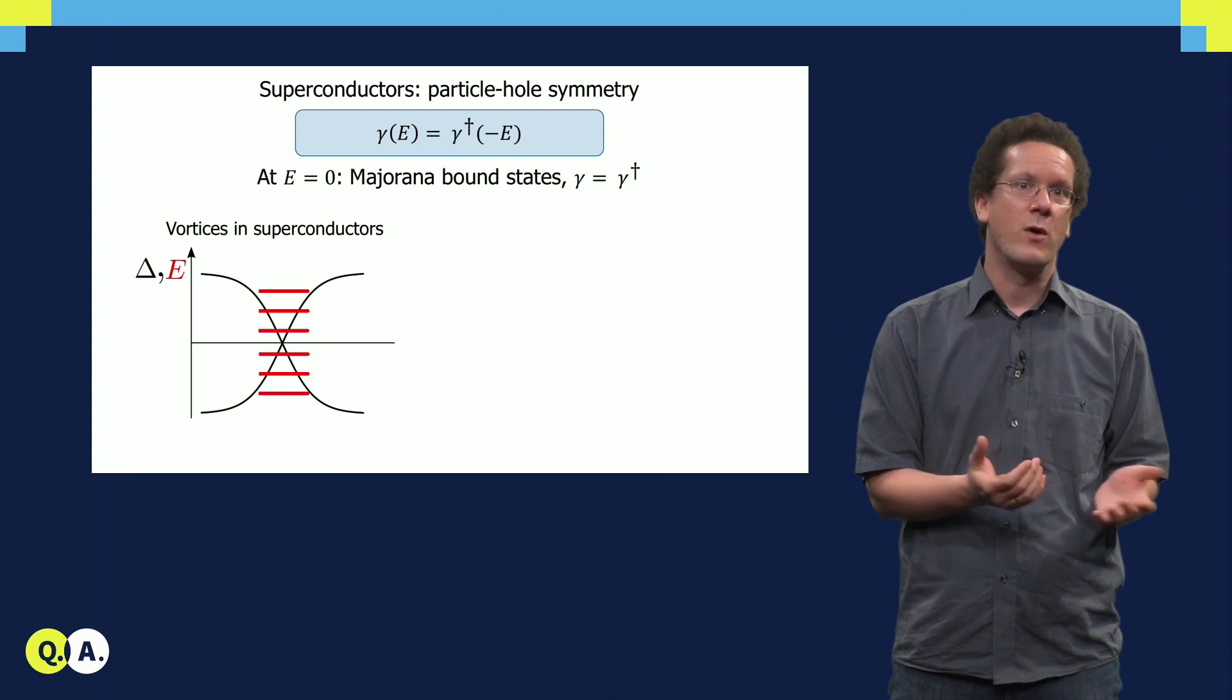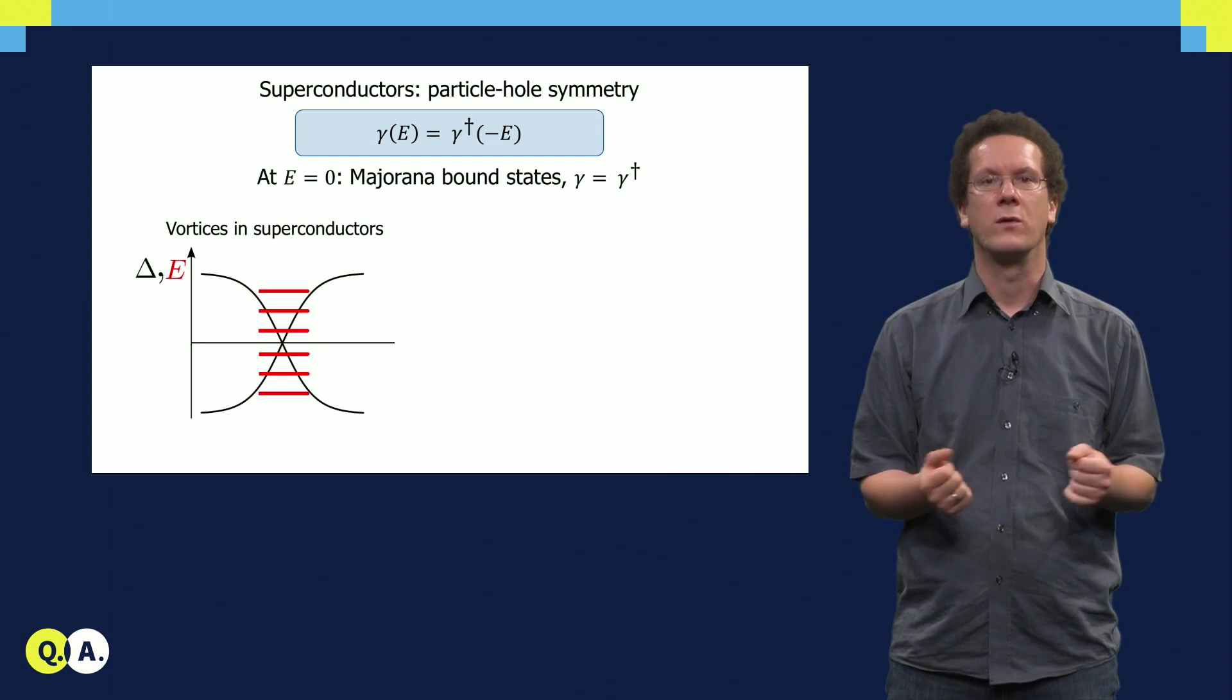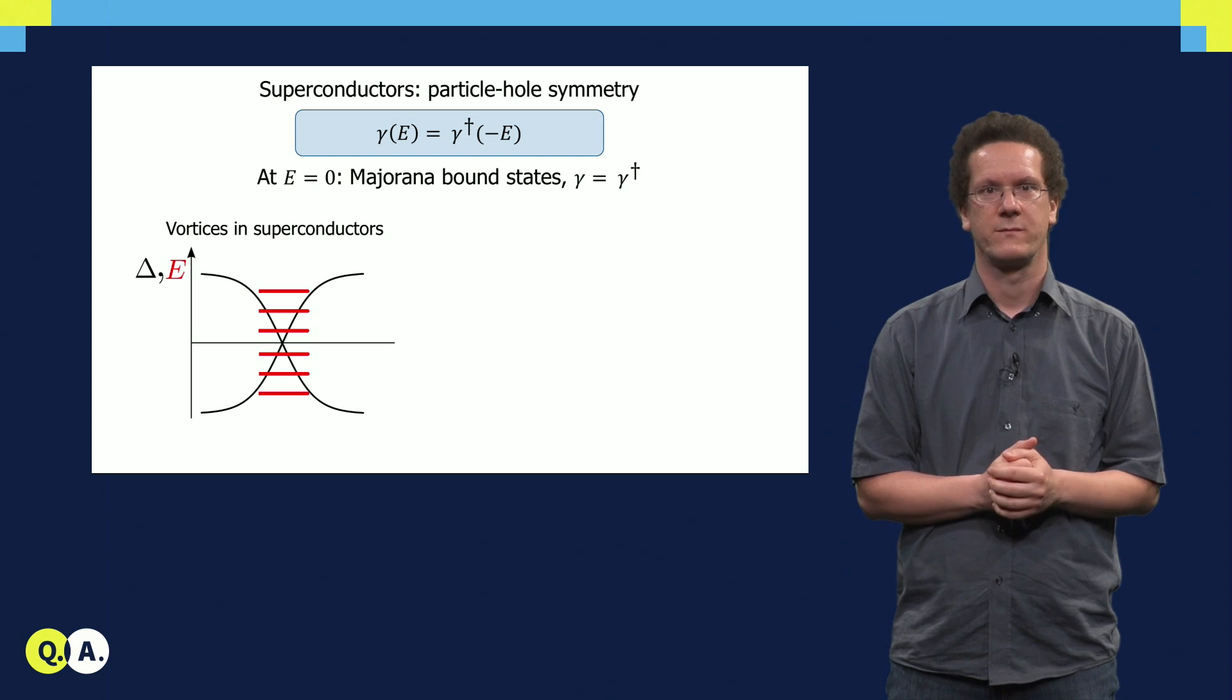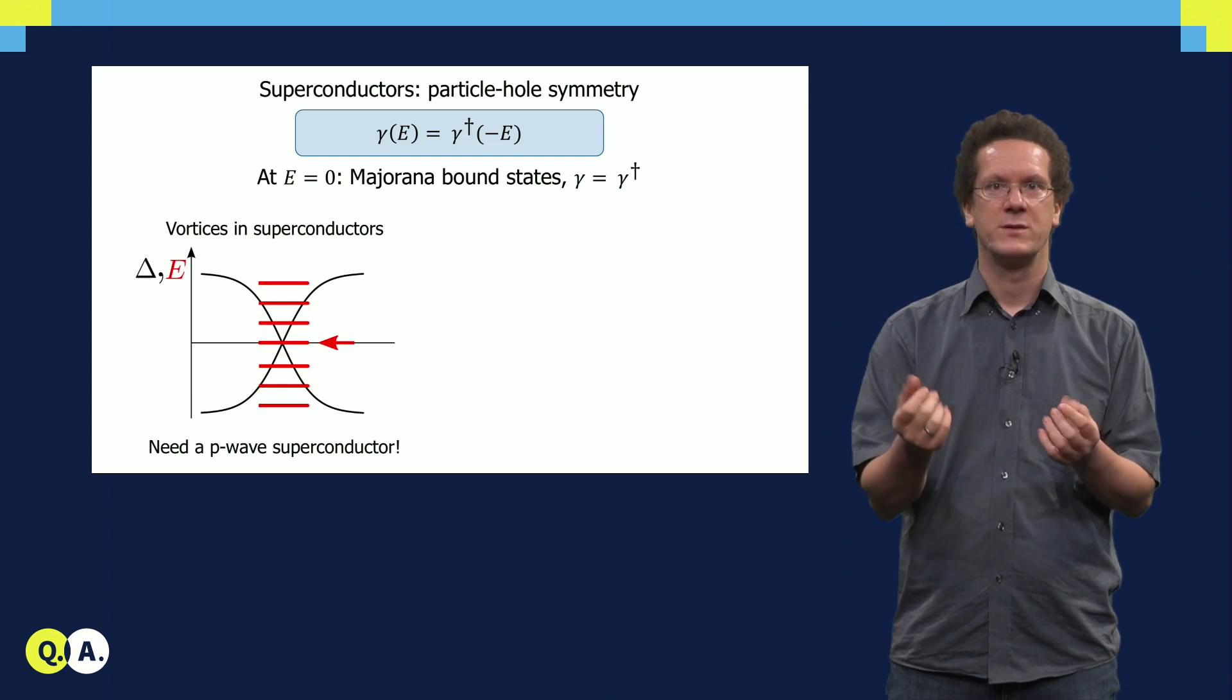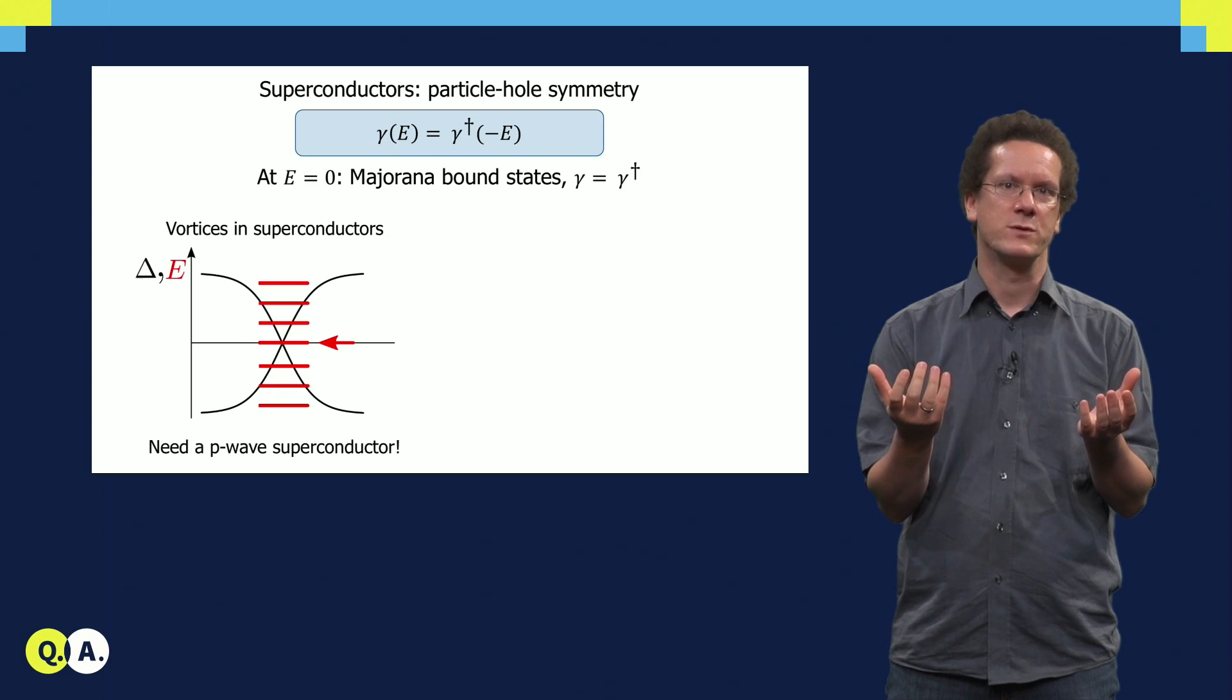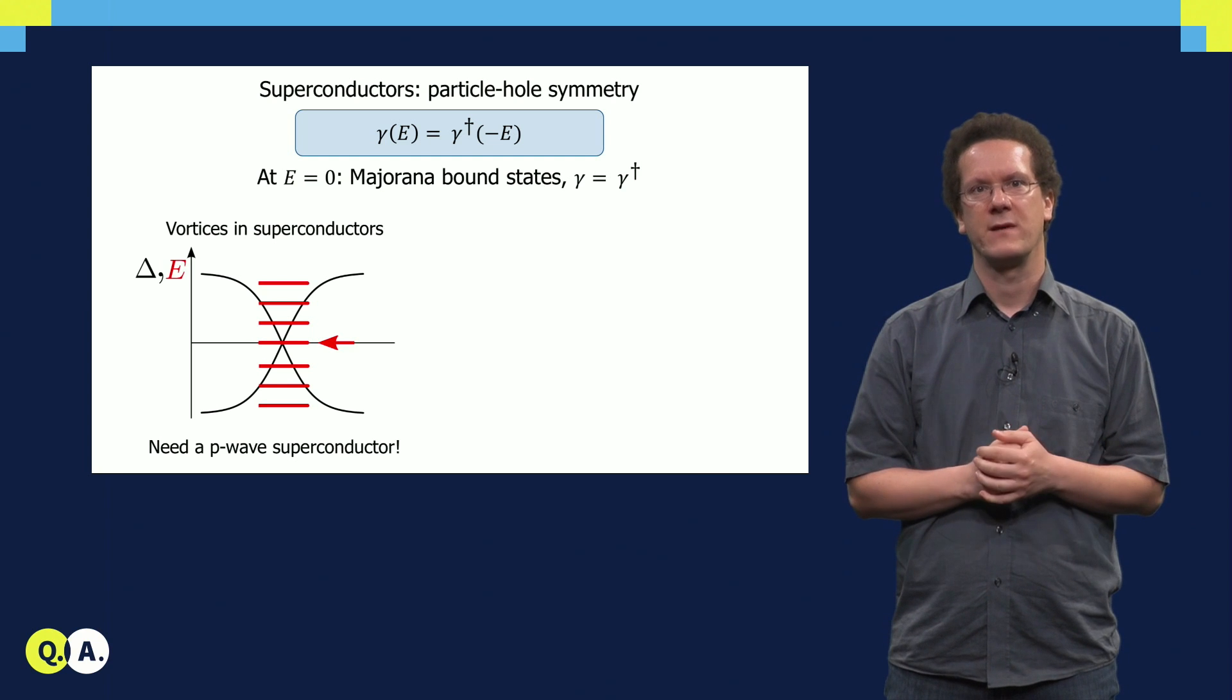To get rid of the zero point motion, one needs to consider unconventional superconductors, such as so-called p-wave superconductors. In that case, there is an additional Berry phase of pi, which can cancel the zero point motion. We get exactly then one state at zero energy, which is a Majorana bound state.